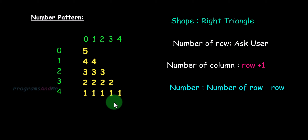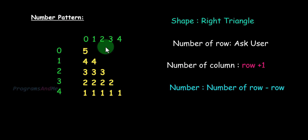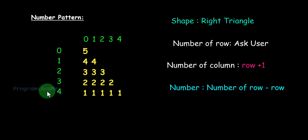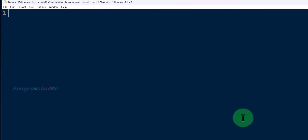So to print the number I will use the formula: number of rows minus row number. Here `row` is the row number and `num` is the number of rows, which we will ask the user to input. This covers the shape of the pattern and the number we want to print. Next, let's write the program in the Python file.